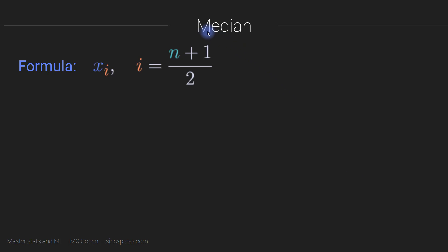Next up is the median. The median is even simpler than the mean. The median is just the data value that divides your data set into two equally sized halves, with one half of the data to the left and one half to the right.